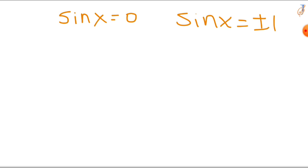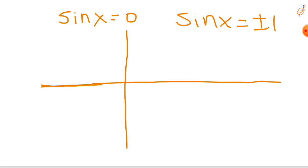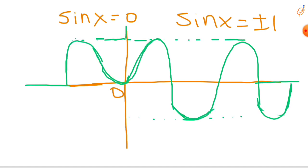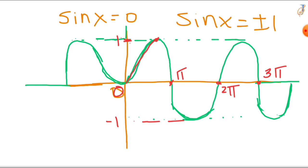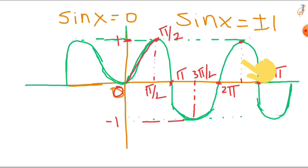Now let's draw a sin graph. This is the x-axis and this is the y-axis, and this is the point 0. The x-axis represents the angle in radians: 0, pi, 2pi, and 3pi. The y-axis represents the corresponding y-coordinates on a unit circle: plus 1 and minus 1. Key points are pi by 2, 3pi by 2, and 5pi by 2. This is what the sin graph looks like.